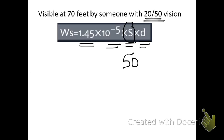Times D, D is the distance that you want the sign to be able to be read. Visible at 70 feet, so there's 70. We got 1.45, that's our constant, times 50, which is the denominator of the Snellen acuity, times 70, the distance we want it to be read at.